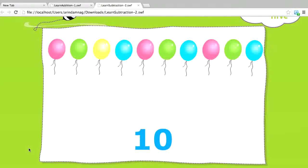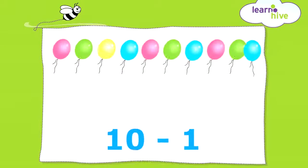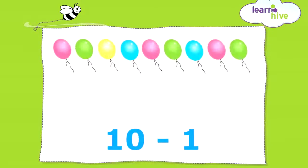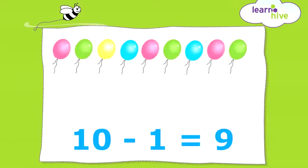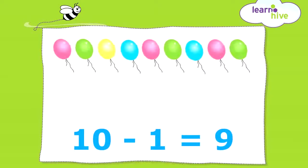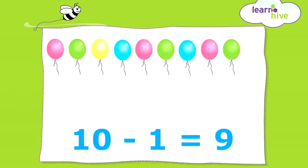Let us learn about subtraction. To subtract is to remove or to reduce. Here are 10 balloons. What happens if one balloon flies away? How many balloons are you left with? Nine. So when you subtract 1 from 10, you are left with 9.